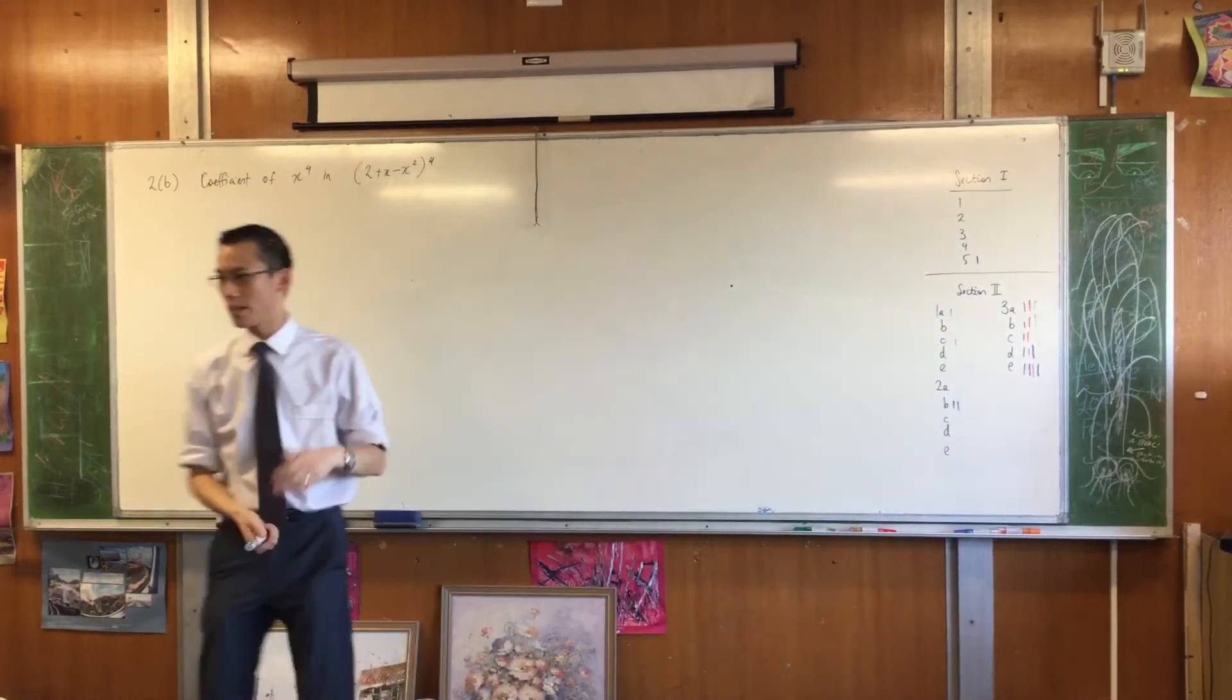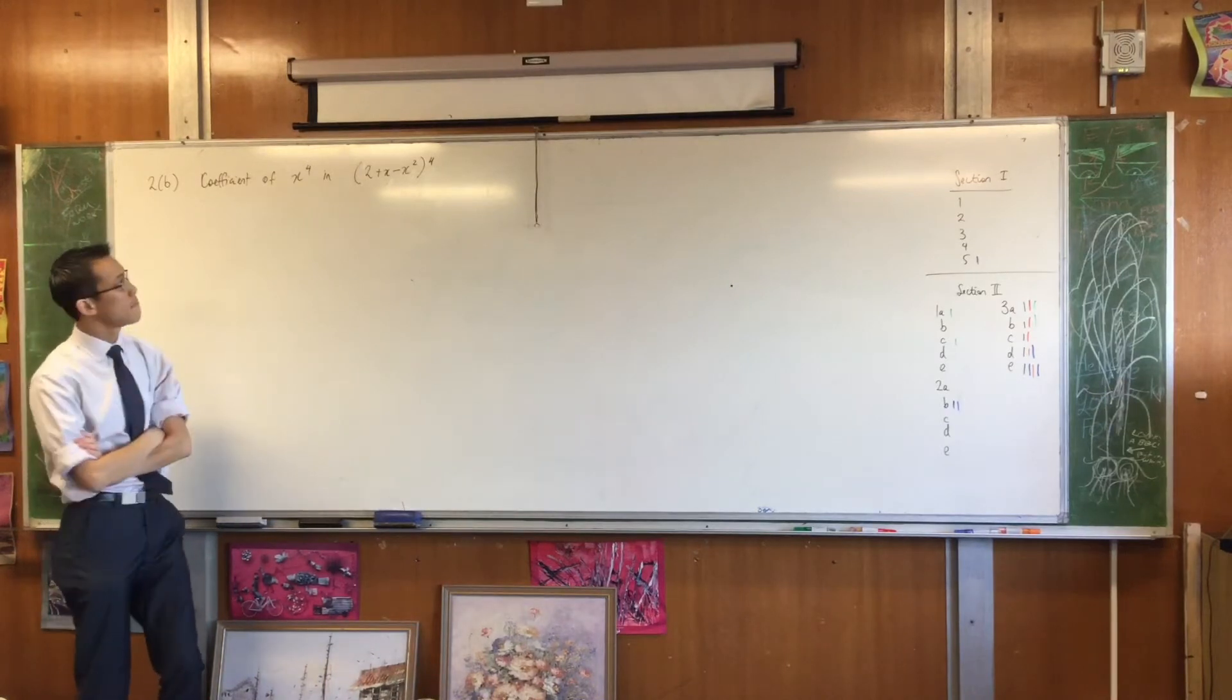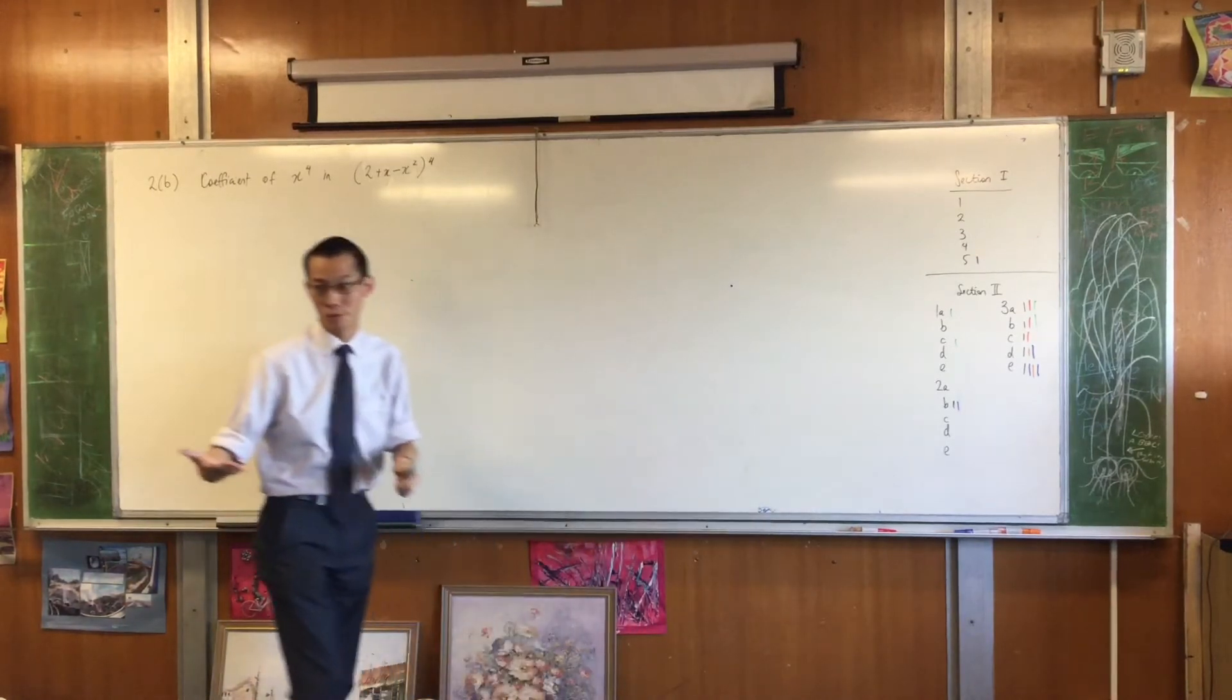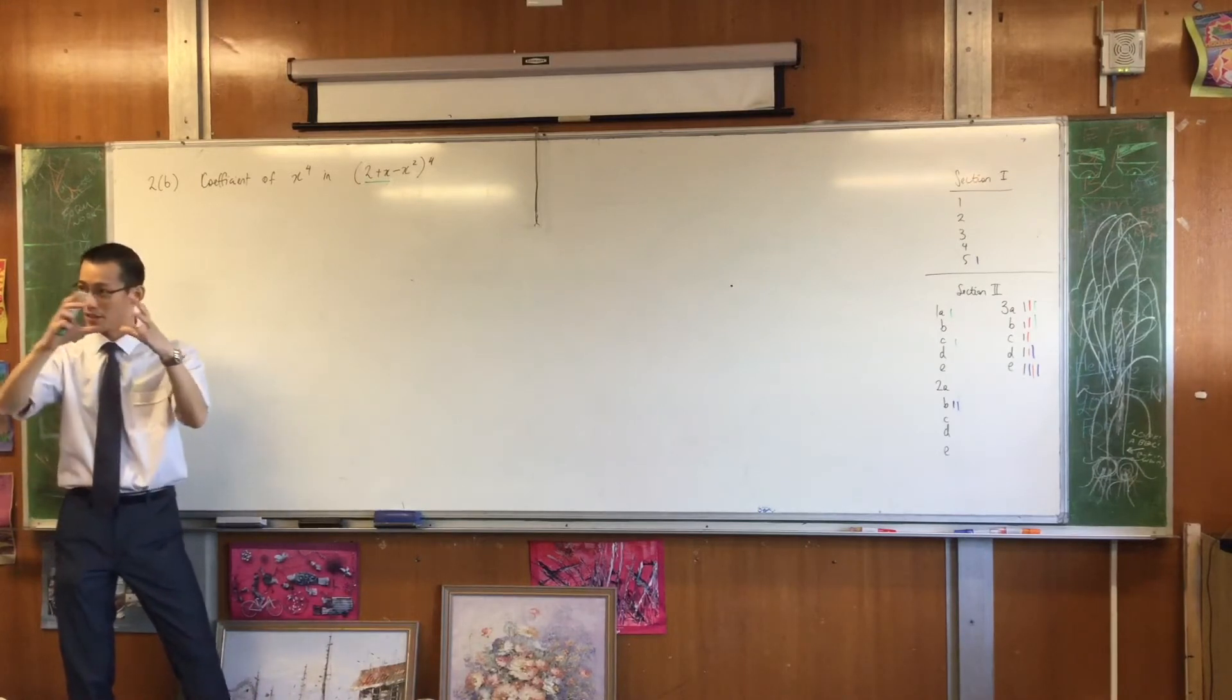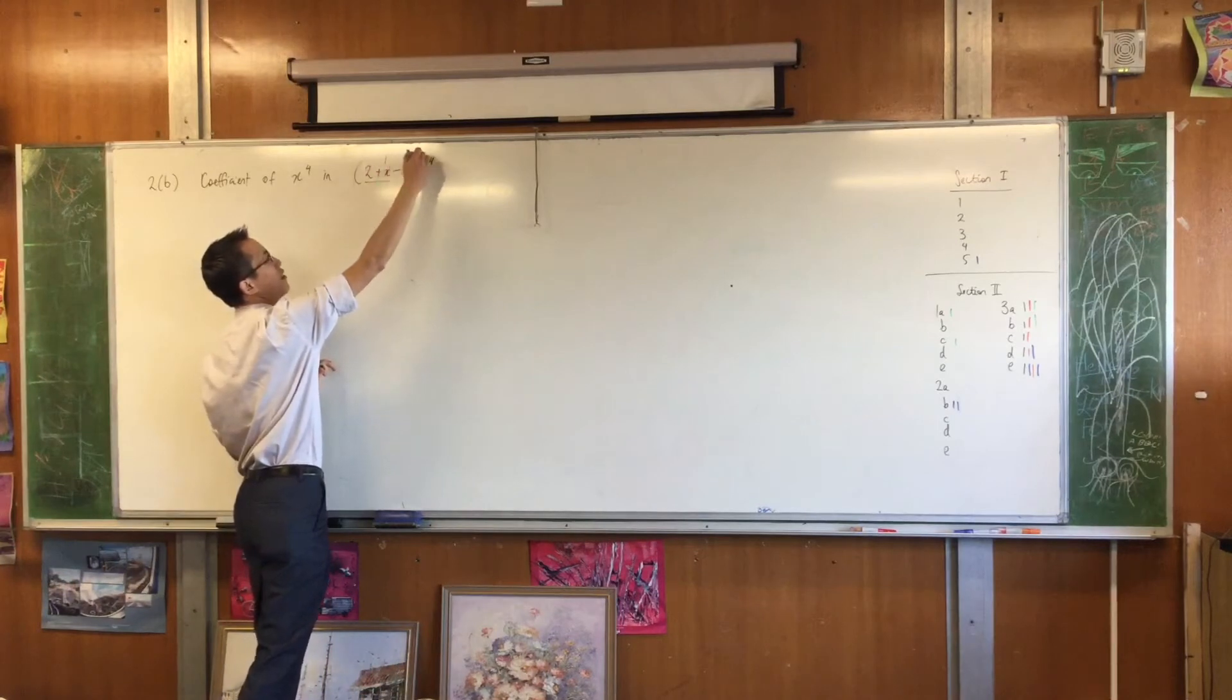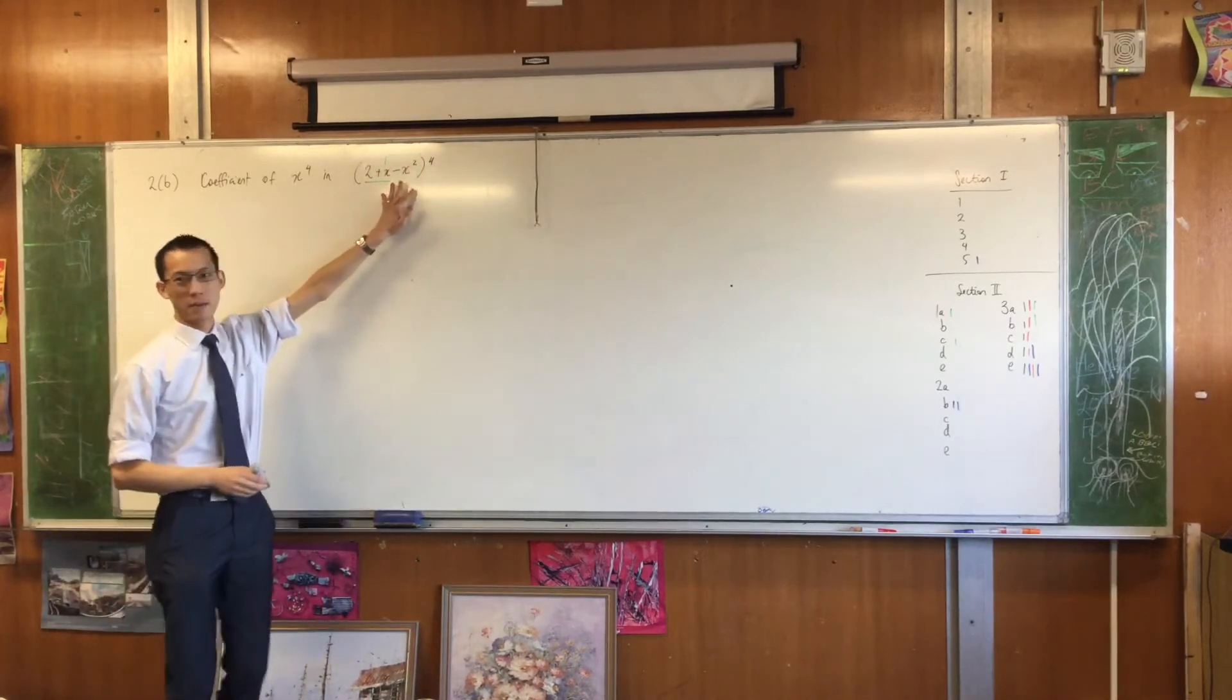The only thing that lets you access big numbers of expansions is binomial theorem. So there are enough clues in the question that you need to use binomial theorem in some way, which means I'm going to have to turn that thing, which is not a binomial right now, into a binomial in some way.